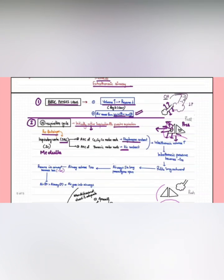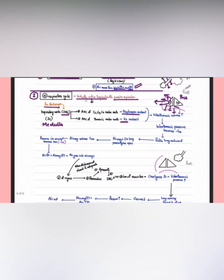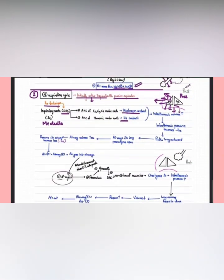During inspiration, the intercostal muscles move out, the diaphragm goes down, air is pulled in, pressure decreases, and air flows from high to low pressure. As sufficient air volume enters, the vagus nerve gets stimulated, increasing inhibition of the dorsal respiratory group. The muscles are no longer stimulated, so the chest wall comes in and the diaphragm comes in.